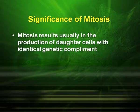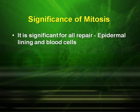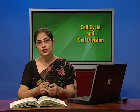Before we conclude this lesson, we must have a look at the significance of mitosis. Mitosis results usually in the production of two daughter cells with identical genetic complement. The growth of multicellular organisms is due to mitosis. It is significant for all repair, such as that of the epidermal lining and replacement of blood cells. Cell growth results in disturbing the ratio between the nucleus and the cytoplasm. Cell division by mitosis restores the nucleocytoplasmic ratio.